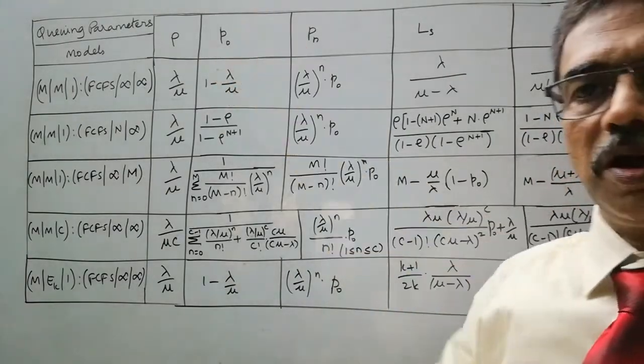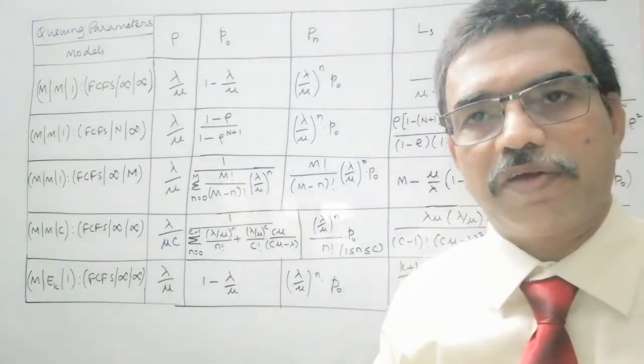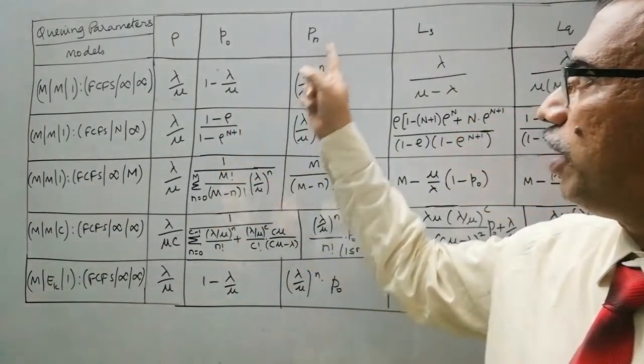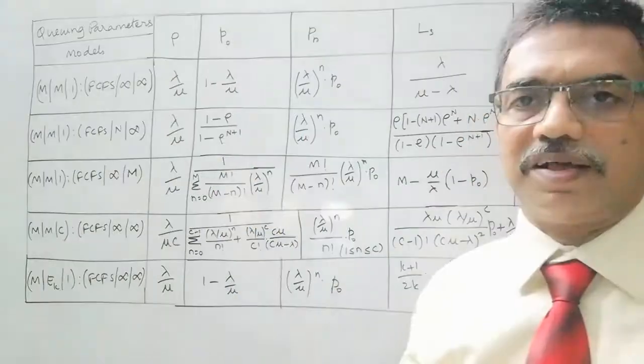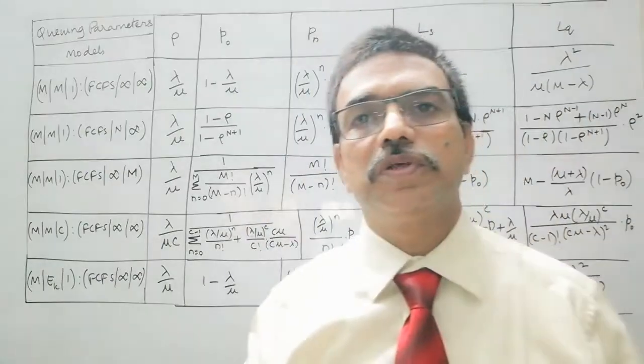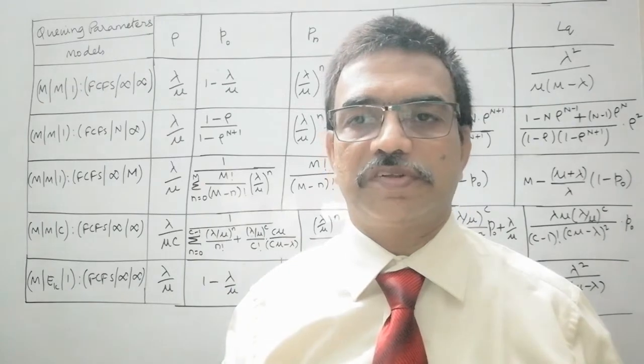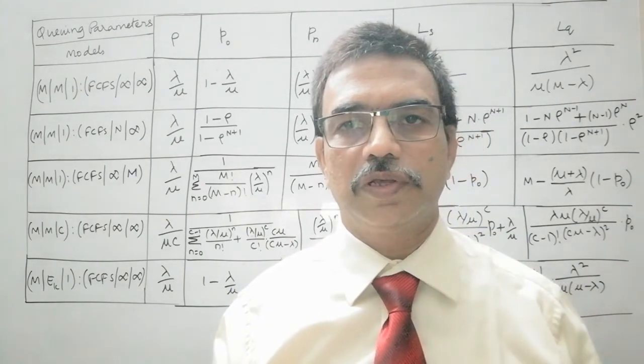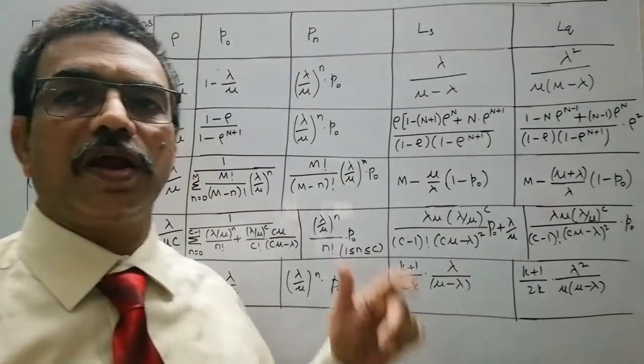Like for P₀, which is probability of having no customer or idle server, and Pₙ, probability of having n customers, and then Ls, Lq, expected number of customers in the system and expected number of customers in the queue. So these relations have been already derived.